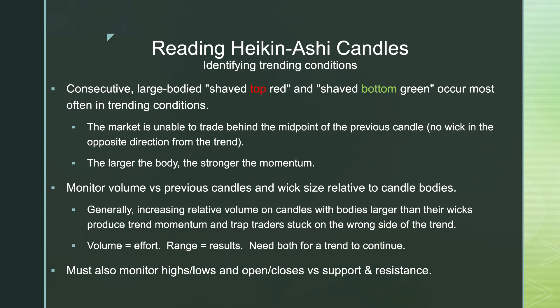Volume is a measure of effort and the range of a candle is the result of that effort. You need to see results if you're going to put in effort, otherwise traders will not follow through. If you expect your trend to continue, you should see volume increasing and range increasing — if that's not the case, reevaluate. You should also be looking at support and resistance using traditional technical analysis. I would not use diagonal trend lines for Heikinashi; horizontal support/resistance is honestly all you need.